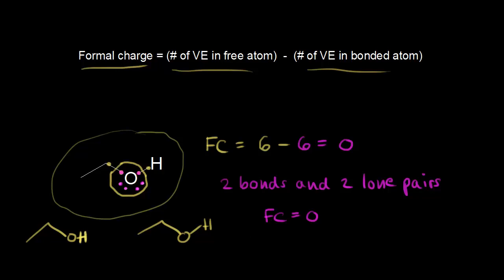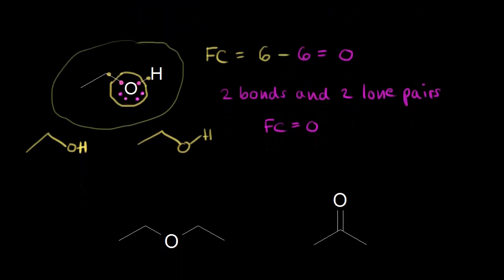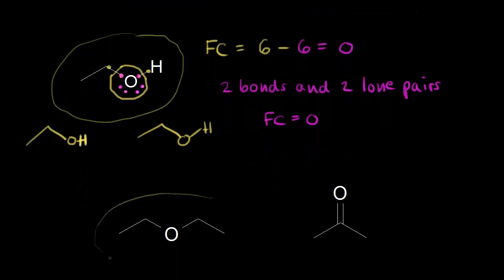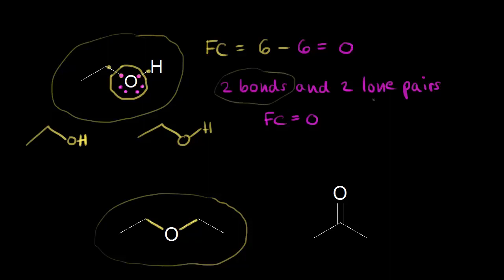Let's look at some other examples where the formal charge on oxygen is equal to zero, starting with the one on the left. We can see we have two bonds here to oxygen — here's one bond, here's the other bond. The lone pairs of electrons have been left off this dot structure, but since the formal charge is zero and we already have our two bonds, there should be two lone pairs of electrons on that oxygen. I'll go ahead and put them in, so we have a total of eight electrons around oxygen — oxygen is following the octet rule here: two, four, six, and eight.